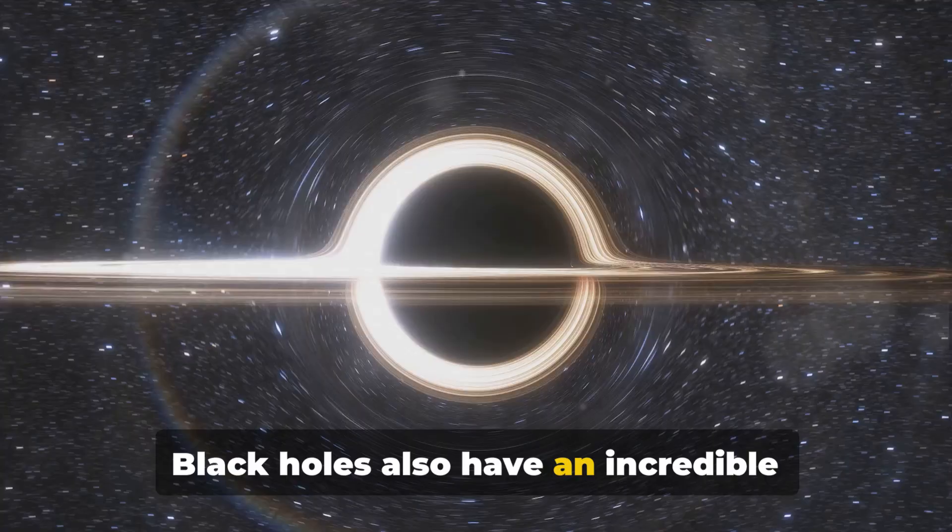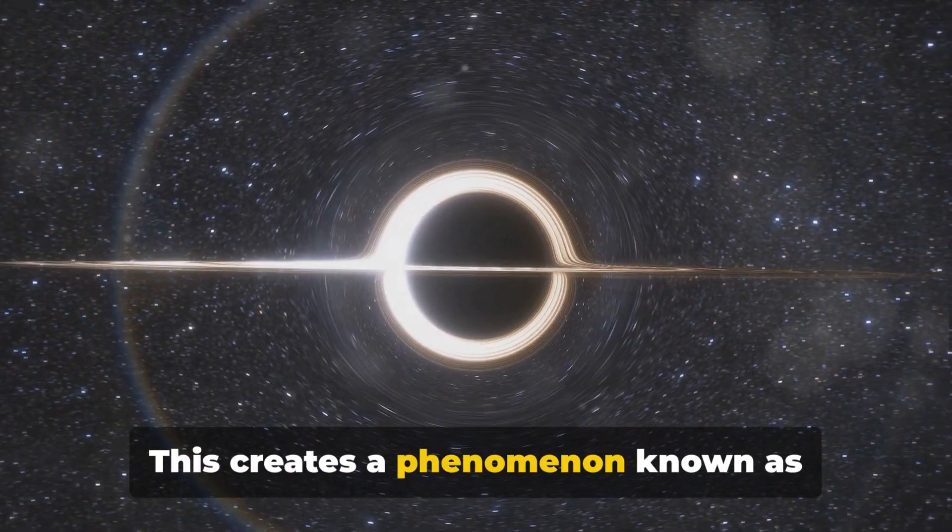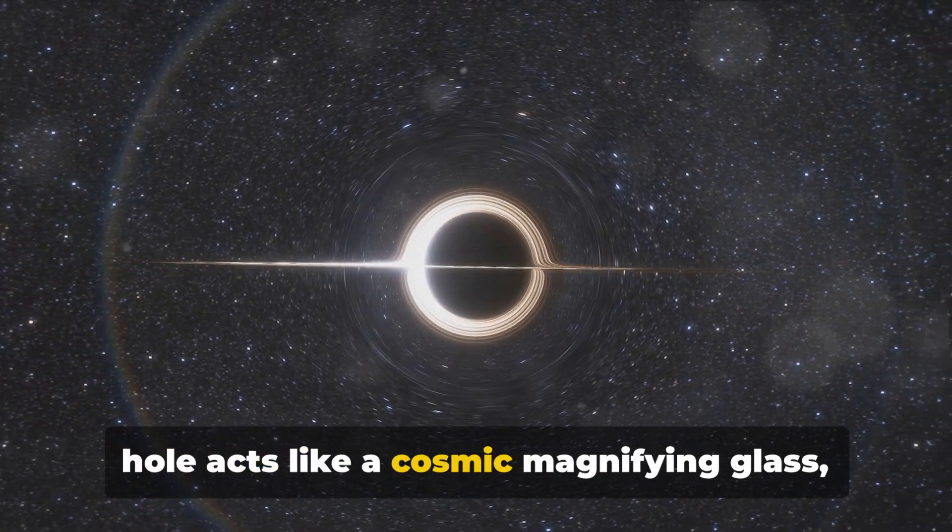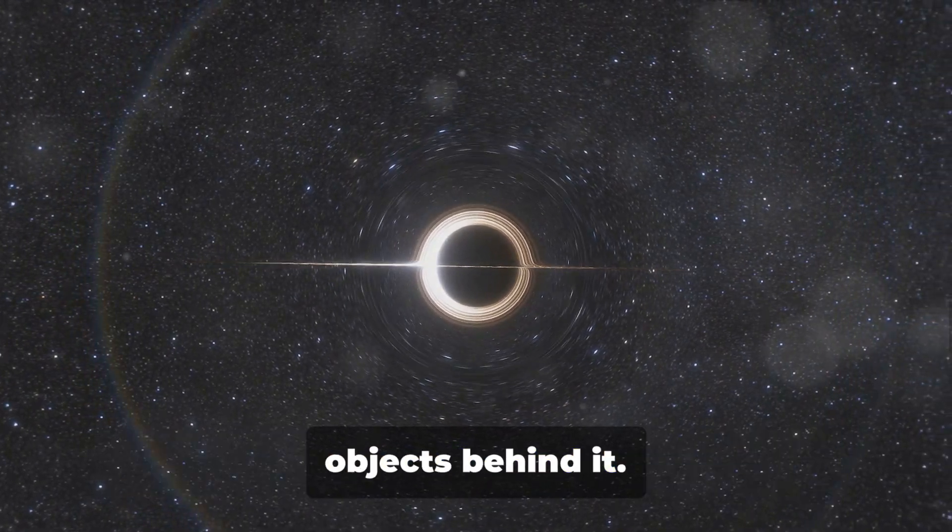Black holes also have an incredible ability to bend light around them. This creates a phenomenon known as gravitational lensing, where the black hole acts like a cosmic magnifying glass, distorting and amplifying the light from objects behind it.